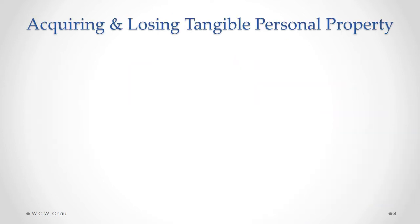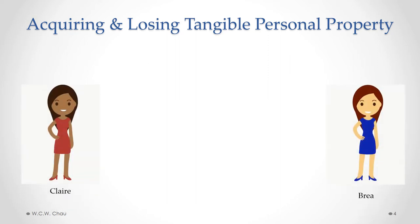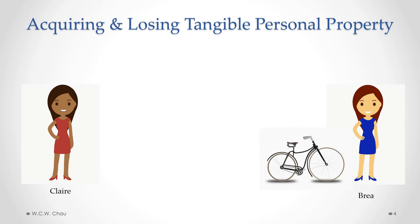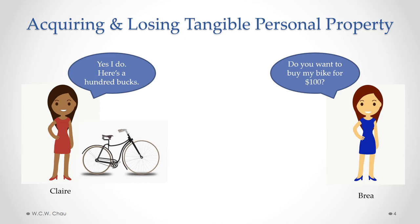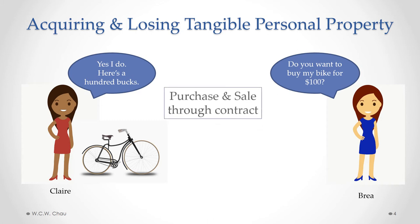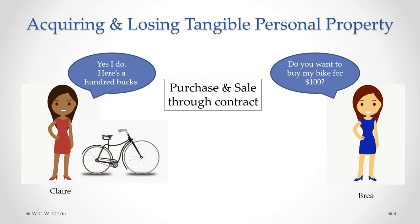We are going to look at the various different ways of acquiring and losing ownership or legal rights over tangible personal property. We have two people: Claire and Bria. Bria is the proud owner of a bike, and she wants to sell her bike to Claire for $100. Claire is very willing to purchase it and hands over $100 to Bria. Because of that exchange, the ownership of the bike has transferred from Bria to Claire — this is a purchase by Claire and a sale by Bria through a contract they've entered into.